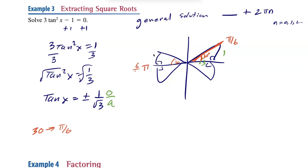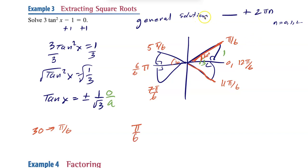So in quadrant 1 we get π/6. π is 6/6, so one less gives 5π/6 in quadrant 2, and one more gives 7π/6 in quadrant 3. For quadrant 4: 2π is 12π/6, one less gives 11π/6. Since it's a general solution, we don't restrict to 0 to 2π — we want all answers, so we just add 2πn to each.